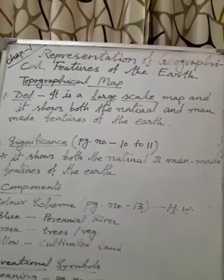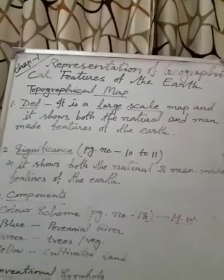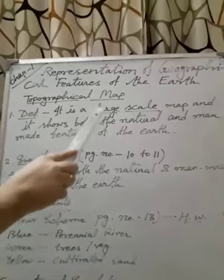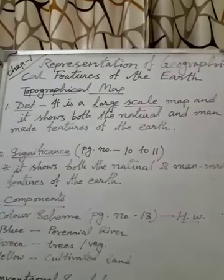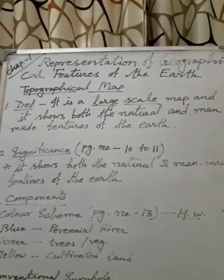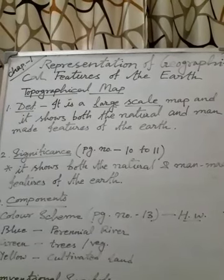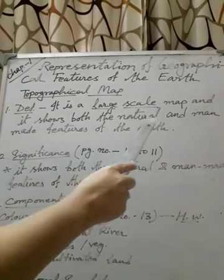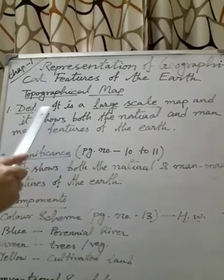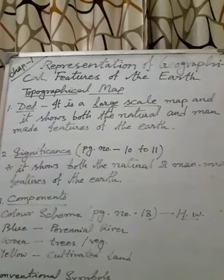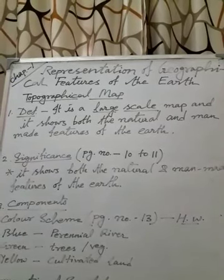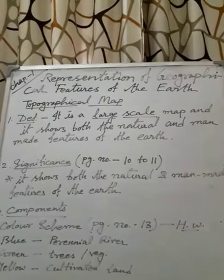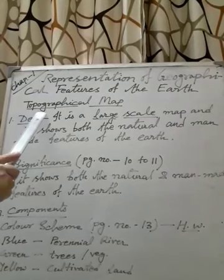A topographical map is a large scale map. On the basis of scale, maps can be large scale or small scale. A large scale map uses a large scale to represent a small area. In a topo map we can represent everything — both natural and man-made features. A small scale map, just the opposite, represents a large area.